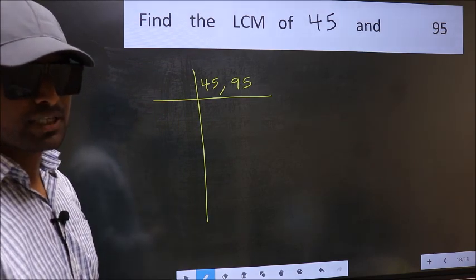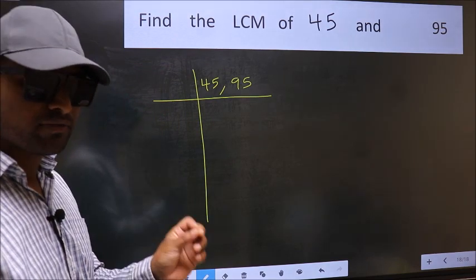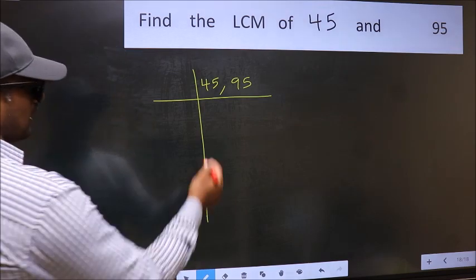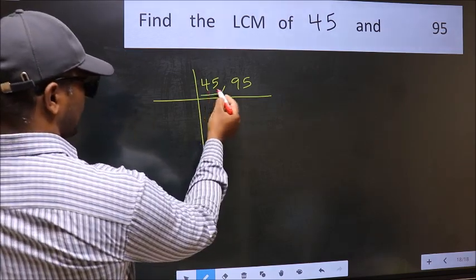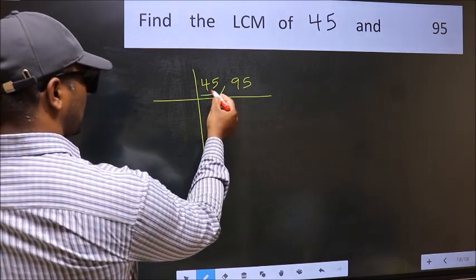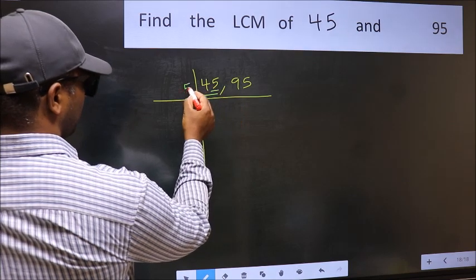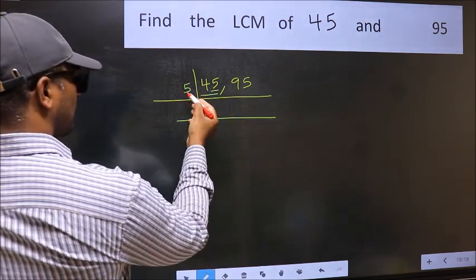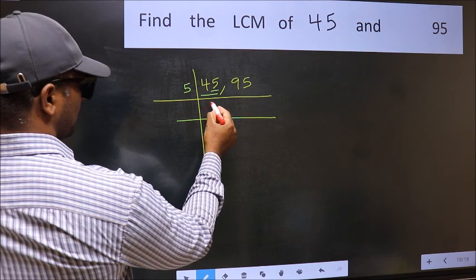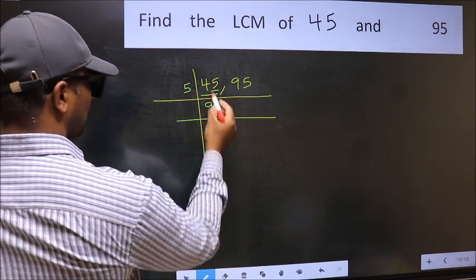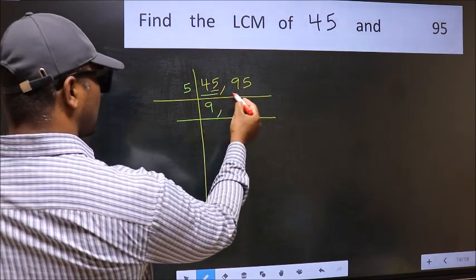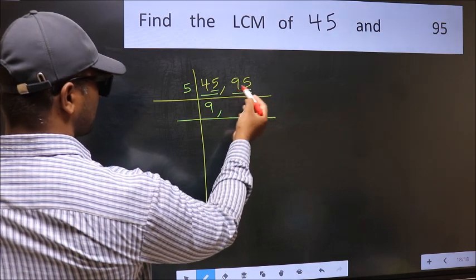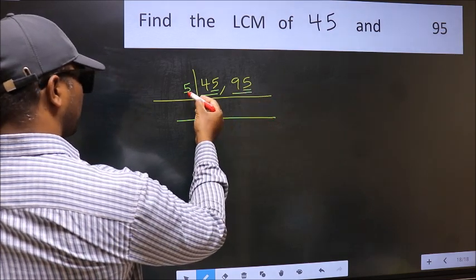Now focus on the first number, which is 45. The last digit is 5, so we take 5. When do we get 45 in the 5 times table? 5 nines are 45. The other number is 95 — last digit 5, so this number is also divisible by 5.